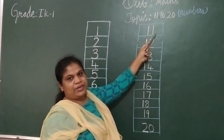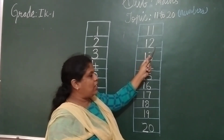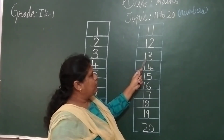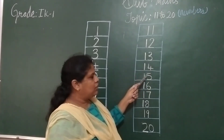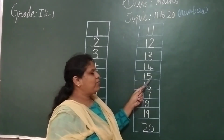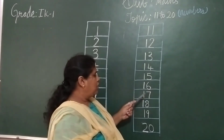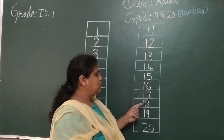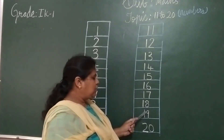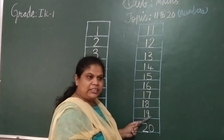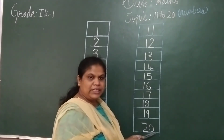See? 1, 1 — 11. 1, 1 — 11. 1, 2 — 12. 1, 2 — 12. 1, 3 — 13. 1, 4 — 14. 1, 4 — 14. 1, 5 — 15. 1, 5 — 15. 1, 6 — 16. 1, 6 — 16. 1, 7 — 17. 1, 7 — 17. 1, 8 — 18. 1, 9 — 19. 1, 9 — 19. 2, 0 — 20. 2, 0 — 20. Understood?